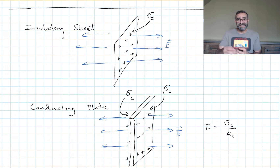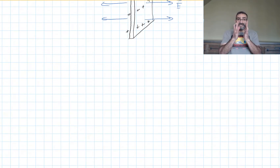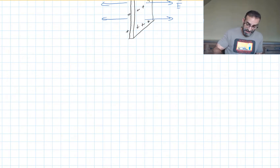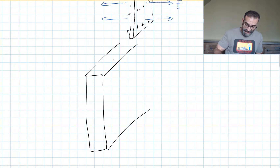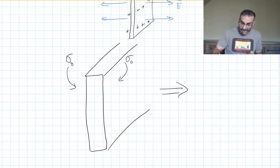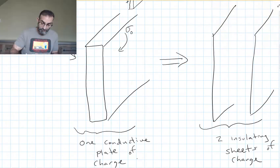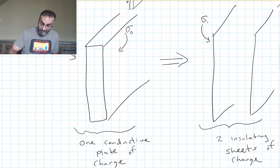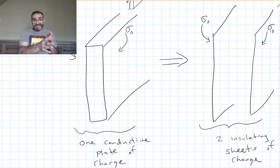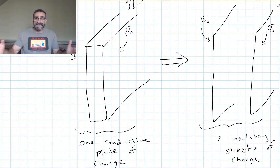It really has to do with the way sigma is defined. Another thing we can do with conductive plates — if we know how the charge splits, we can treat them as two insulating plates. If I have a conductive plate with sigma_naught on each side, that's equivalent to two insulating plates where the charge density on each sheet is sigma_naught. I can split that conductive sheet into two insulating sheets with the same charge densities and calculate all my electric fields and get the exact same answer.